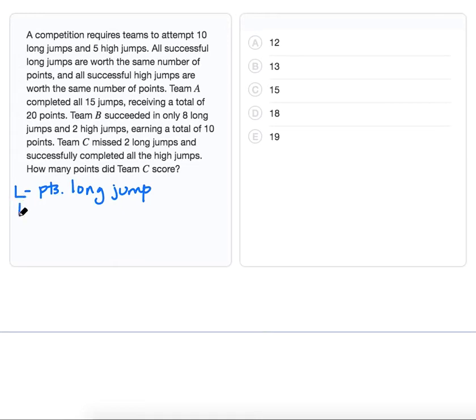We're going to let the variable H be the points awarded for a high jump. Now we know something about the points earned by Team A and Team B, so let's see if we can write two equations that will help us.